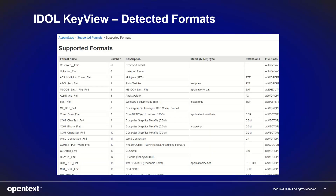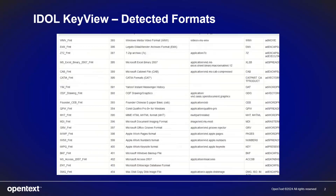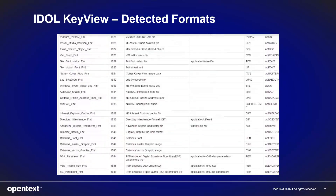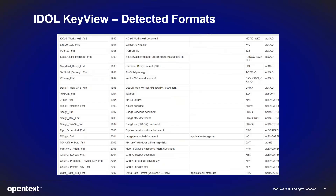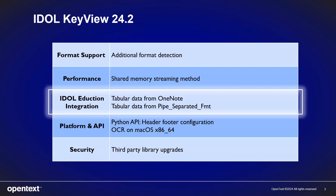24.2 takes the number of file formats that can be detected by KeyView to over 2000. 24.2 further increases the benefits you get from using KeyView and IDOL Eduction together, identifying and tagging tables from OneNote and pipe-separated format in a way that Eduction can process.